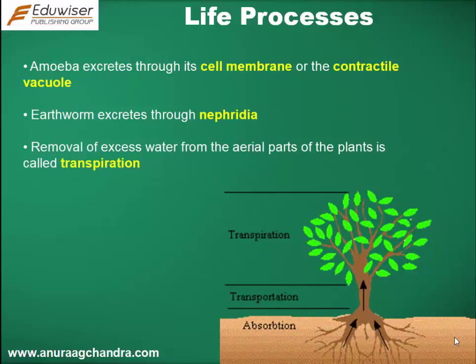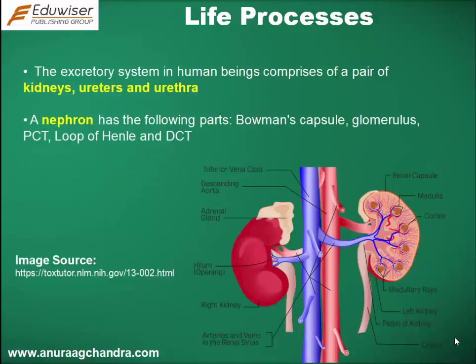Amoeba excretes through its cell membrane or the contractile vacuole. Earthworm excretes through nephridia. Removal of excess water from the aerial parts of the plants is called transpiration. The excretory system in human beings comprises of a pair of kidneys, ureters, and urethra.